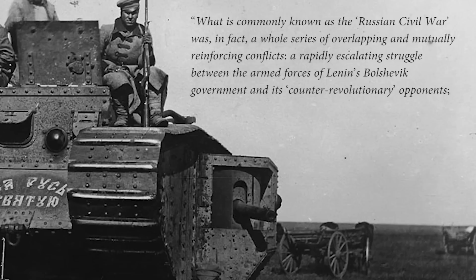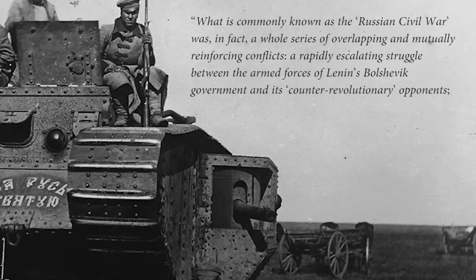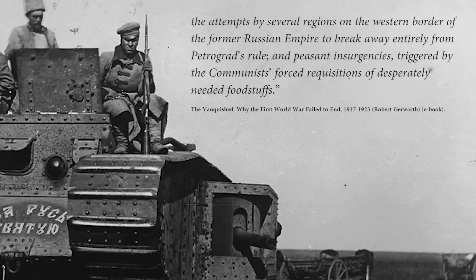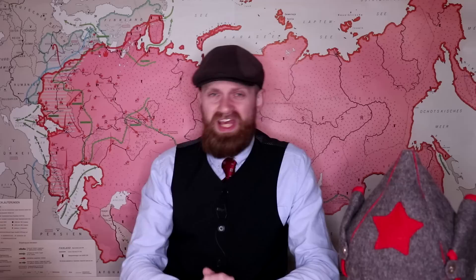According to historian Robert Garrowoth, the Russian Civil War can be analyzed as three different conflicts: the Reds versus the Whites, the Reds versus the Nationalist factions, and the Reds versus the Peasants. It was a whole series of overlapping and mutually reinforcing conflicts. In this video we're going to focus on the conflict between the Reds versus the Whites — a much broader conflict I'll deal with in other chapters in the future.